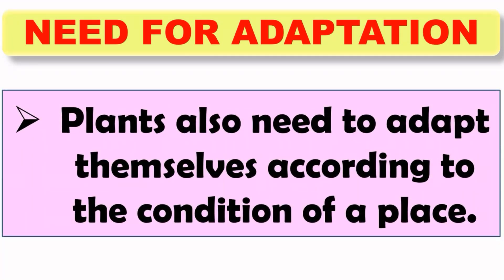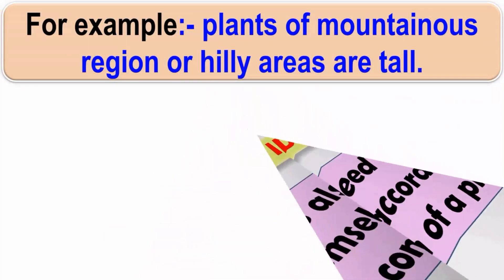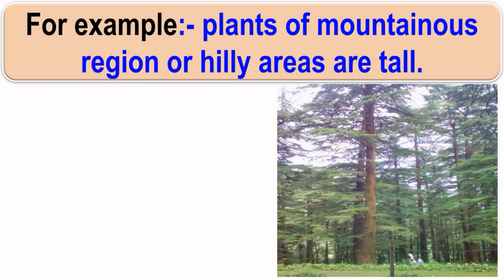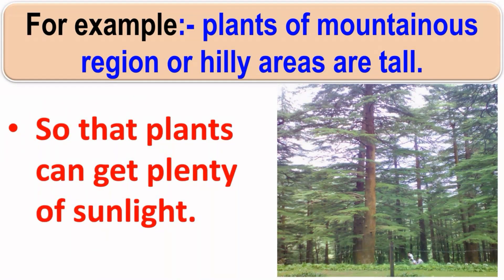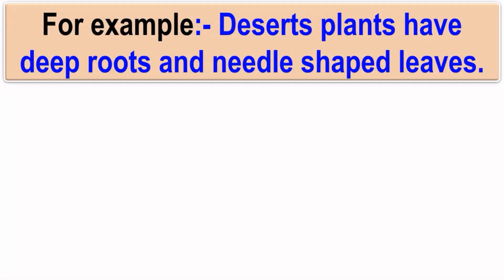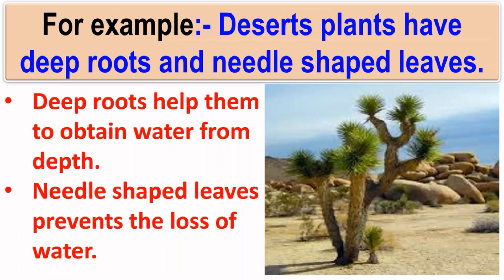Plants also need to adapt themselves according to their surroundings. For example, plants of mountainous or hilly areas are tall so that they can get plenty of sunlight. If plants in hilly areas do not become tall, they might not get a proper amount of sunlight, which may affect their growth. Similarly, desert plants have deep roots and needle-shaped leaves. These roots help them obtain water from depth, and needle-shaped leaves prevent water loss. These adaptations are essential for plants to survive in deserts.